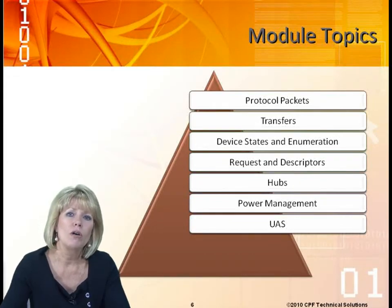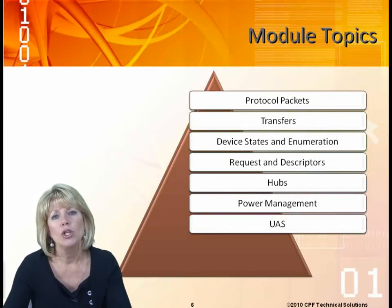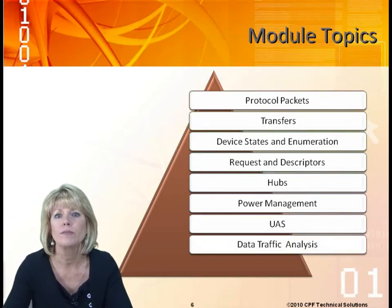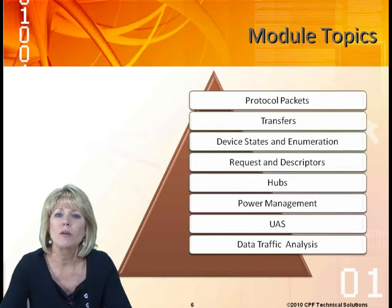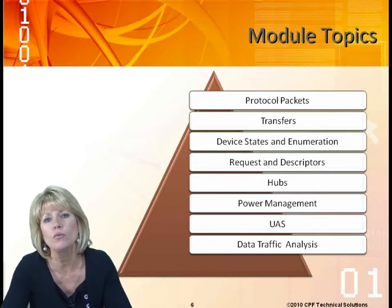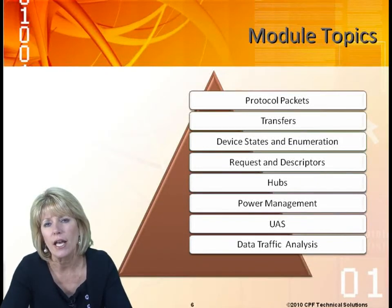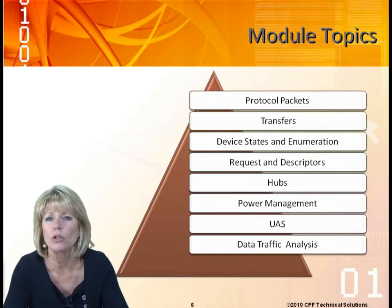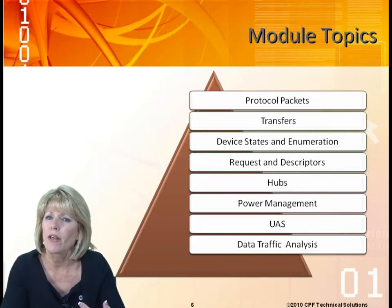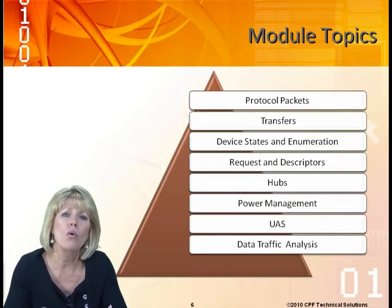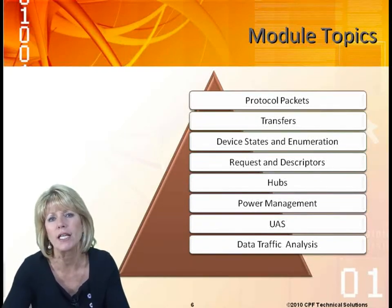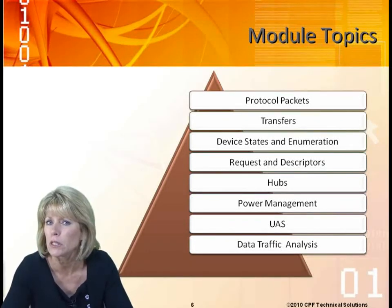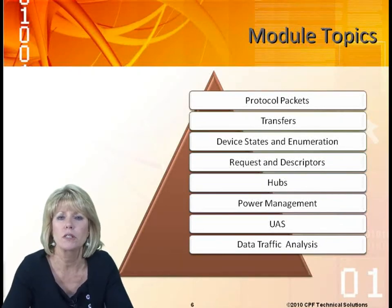We'll look at a new protocol called UAS, which was added for Serial Attached SCSI. Finally, we'll get into some actual data traffic analysis, pulling up captured data and looking at how traffic flows in USB. We'll look at the packets, the acknowledgements, and how handshaking is done — how a device or the host indicates how much data it can take. We'll look at different transaction packets to see how link management and power management are handled.